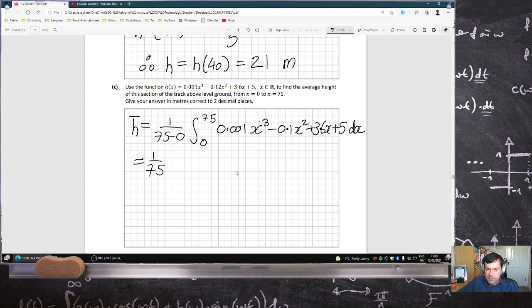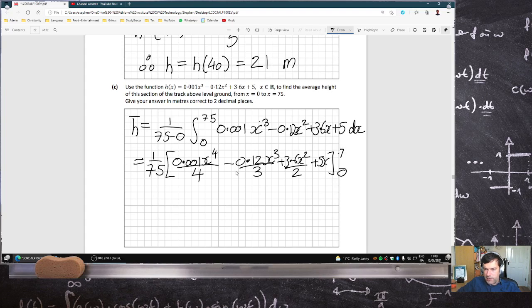Wrote a little bit too big. So that would be 1 over 75. Increase the power by 1 and then divide by the new power. Increase the power by 1, divide by the new power. Increase the power by 1, divide by the new power. And then 3.6x. And then the limits, 0 and 75. Let's put in the 2 limits and subtract them. This will take a moment.